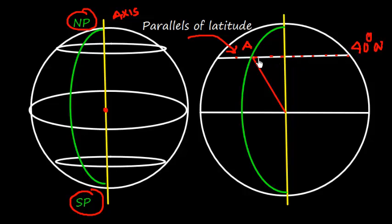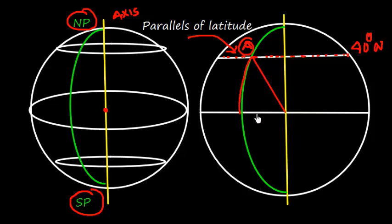At place A, the parallel of latitude has the same value throughout — for example, if it is 40 degrees North, then at every point on that parallel the latitude is 40 degrees North. The latitude of place A is defined as the arc of meridian contained between the equator and the parallel of latitude passing through that place.